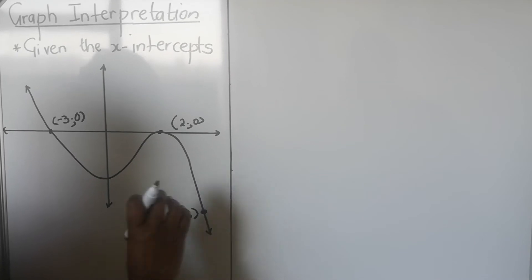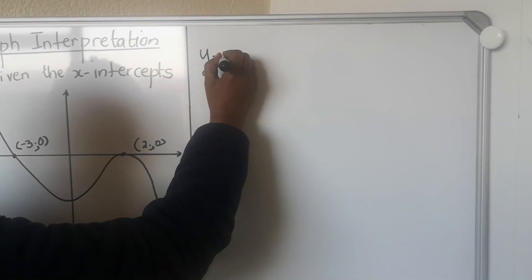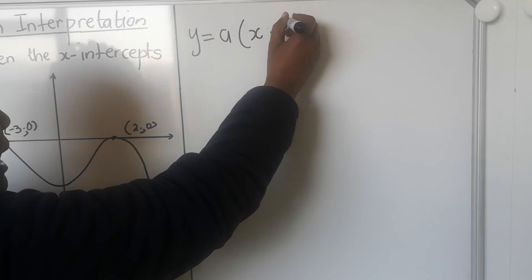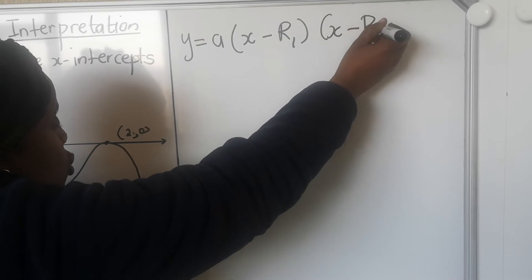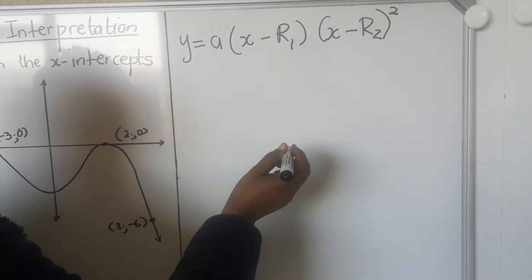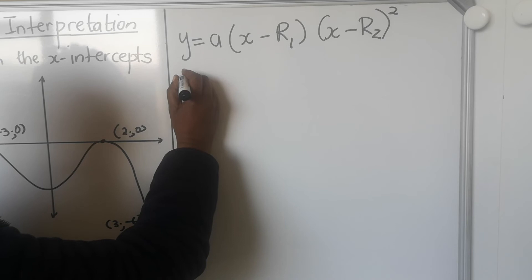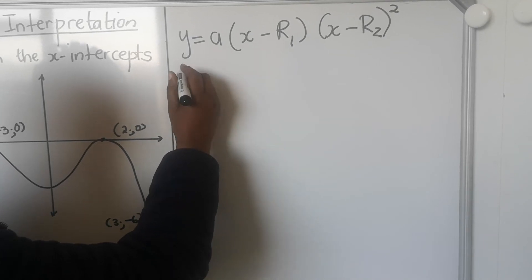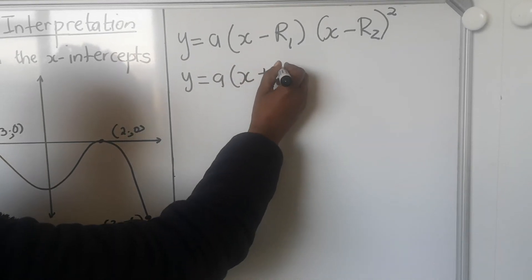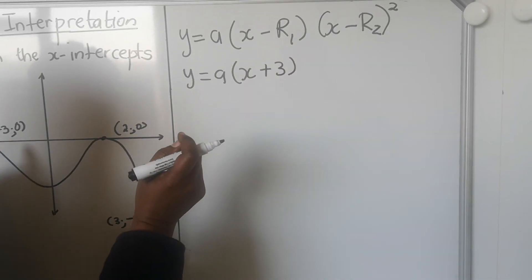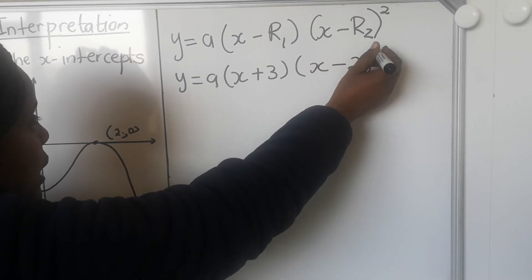The question here is to determine the equation. They didn't ask for a, b, and c specifically. So what we're going to do is write y is equal to a times (x minus r1), which is the first intercept, times (x minus r2) squared — because the one that has a square is the intercept that is also the turning point. My r1 is minus 3, so that gives x minus negative 3, and the turning-point intercept gives (x minus 2) squared.